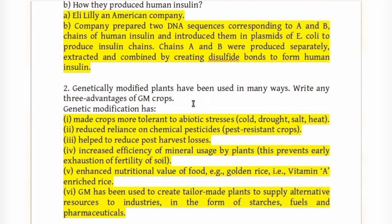GM crops are also used to create tailor-made plants to supply alternative resources to industries in the form of starches, fuels, and pharmaceuticals. You need to write any three of these advantages.